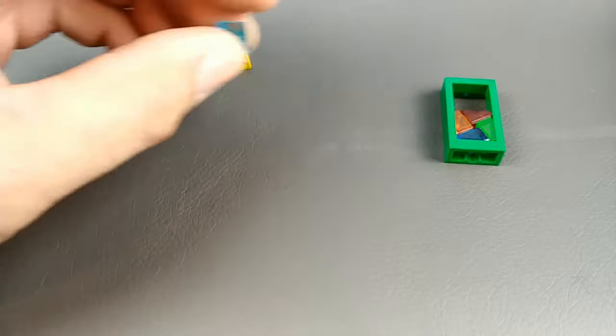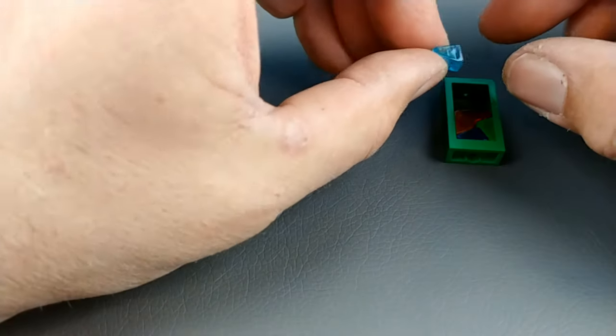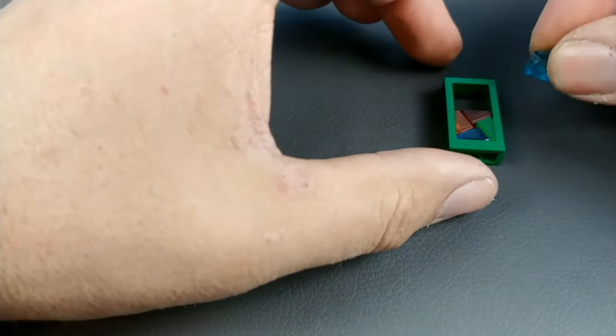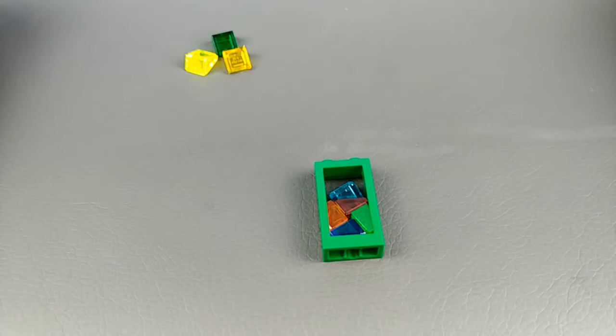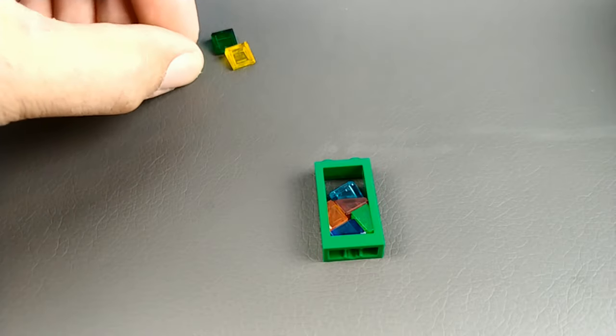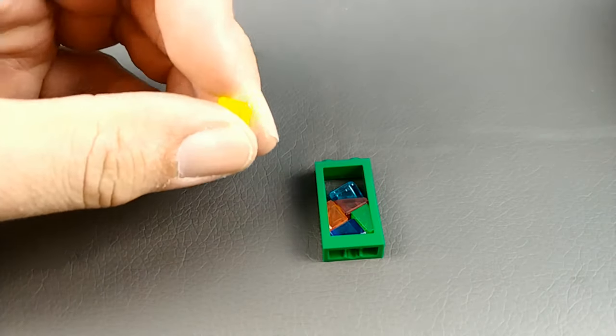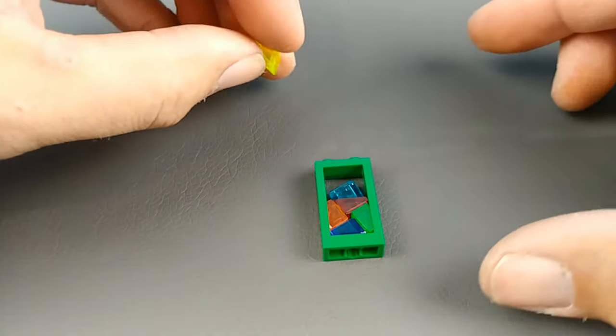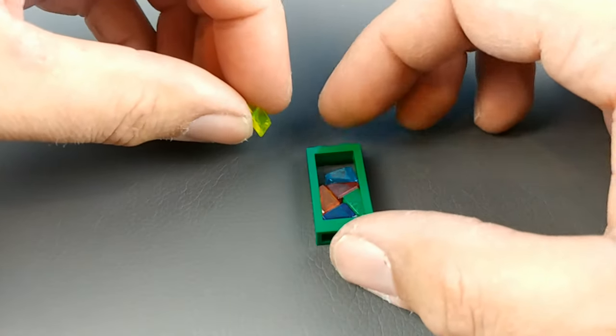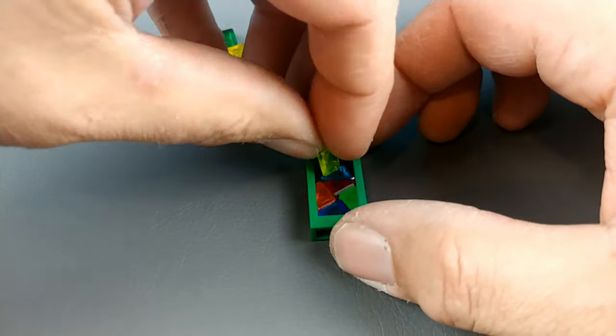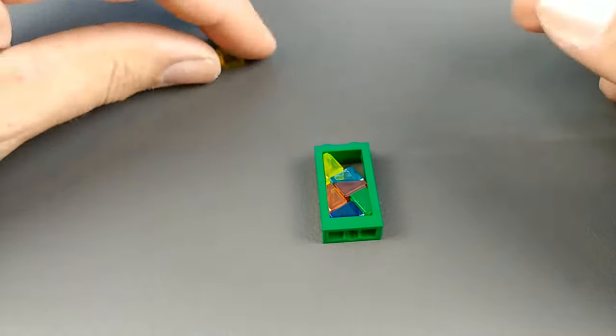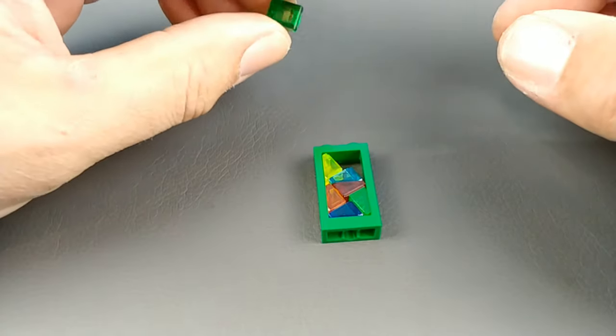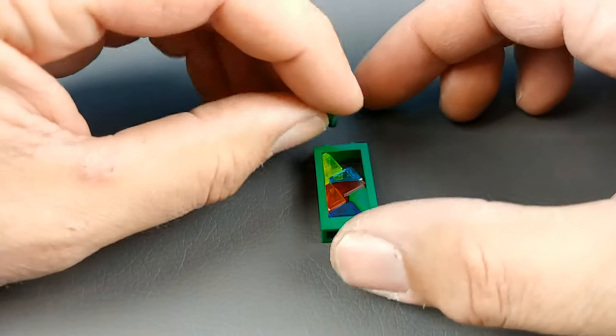So now we're gonna, again the stud goes up on top, so we're gonna take that and put that down first. Now we're gonna take our next piece and again with the stud opening to the inside we're going to place that one there. Now we're gonna take our next piece and we're gonna come over to this side and we're gonna put that one right there.